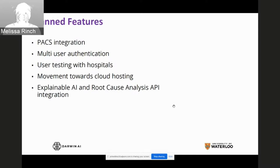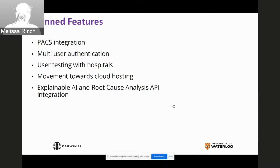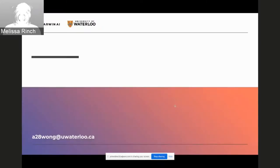Finally, a little bit about the explainable AI API. Currently Darwin AI has technology for explainable AI and root cause analysis, and we'd like to include that as an API so we can see those regions on the chest X-ray scan and make it easier for radiologists to make those predictions. That's a little bit about our COVID-NET, and we'd be happy to take any questions that anyone in the audience has.